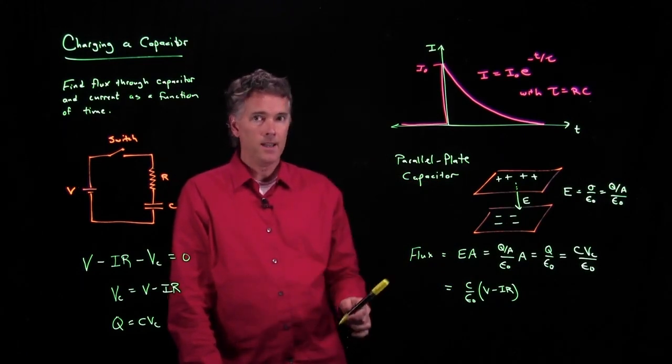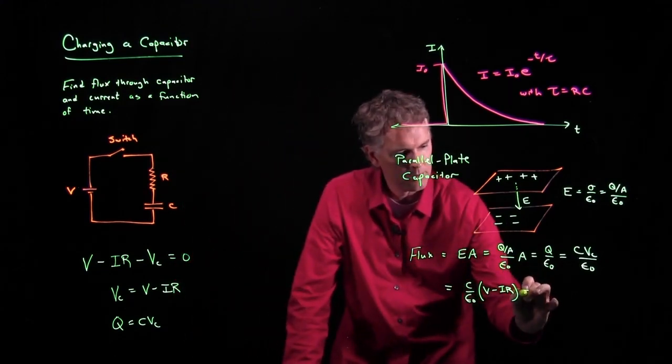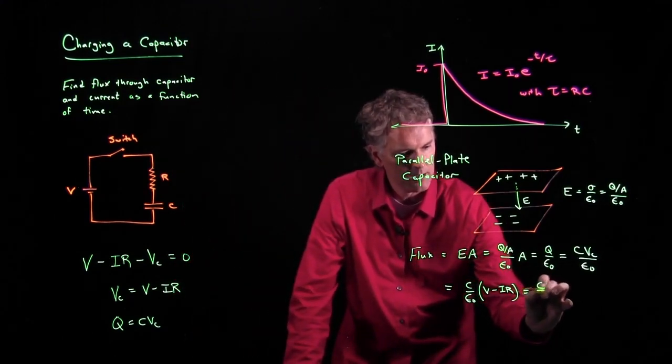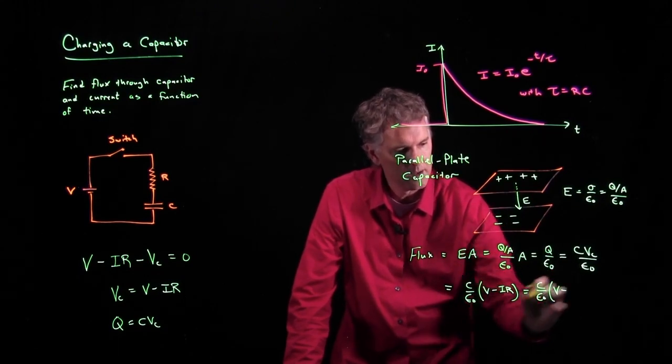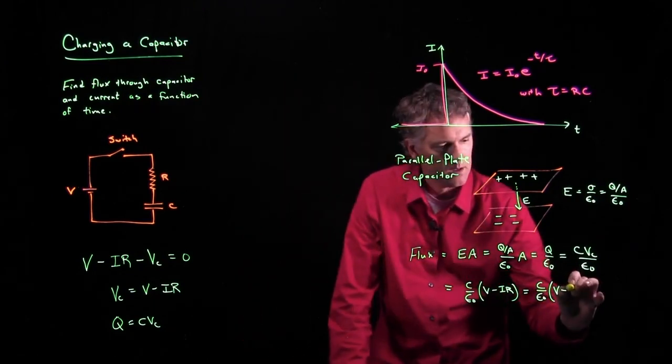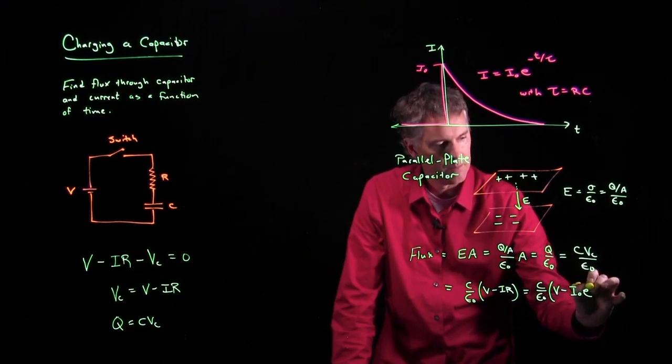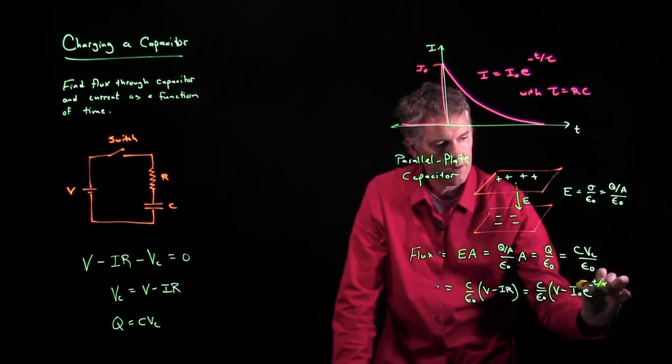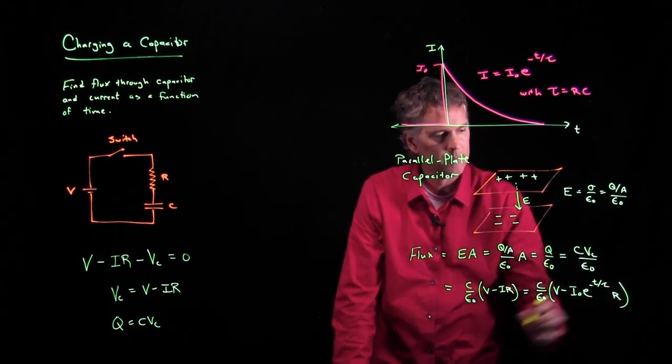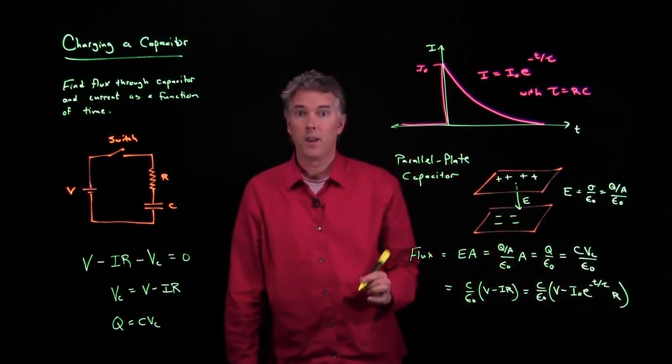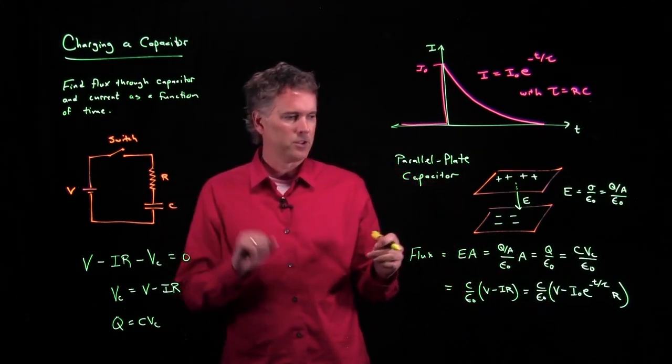But I is given by this thing right here. So what does this all become? We get C over epsilon naught times V minus I naught E to the minus T over tau, and then we've got to multiply that stuff by R. So now this is the flux through the capacitor as a function of time.